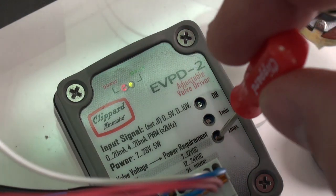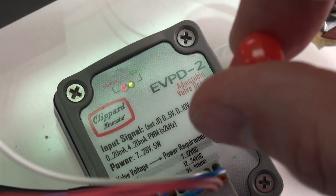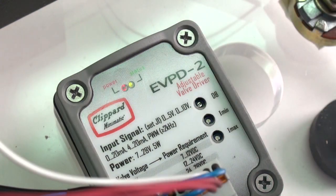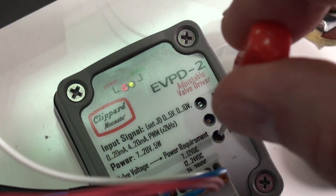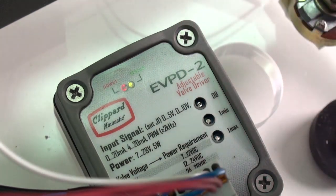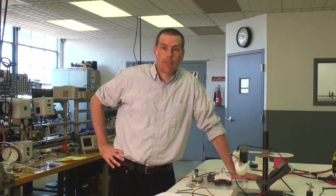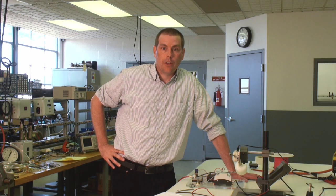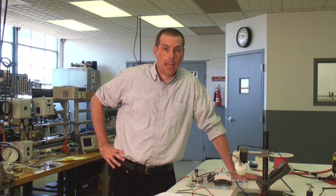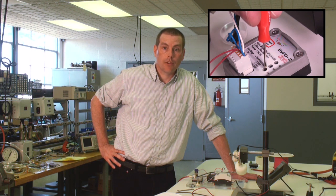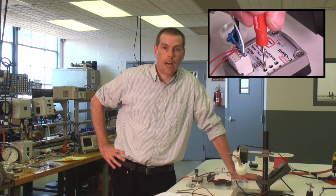Finally, we need to adjust the maximum current. For most applications, that will probably be the max rated current of the valve, and this value should never be exceeded. In some cases, you may find that the max flow of the valve is more than what you need in your application. In that case, you can use the I-max adjustment of the driver to limit the amount of flow through the valve.